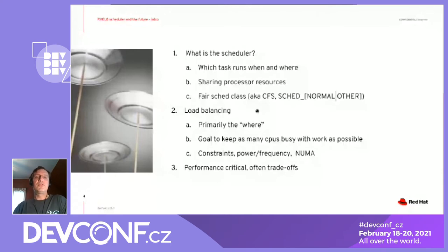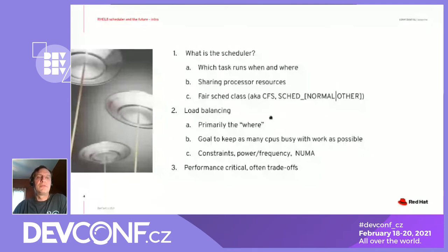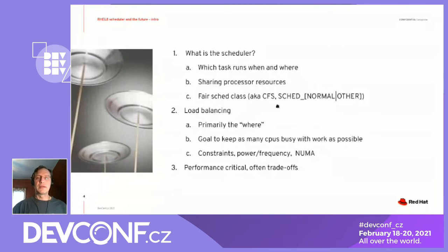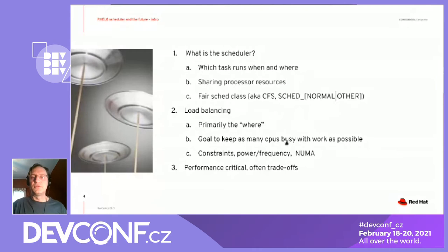In addition to determining when tasks run — for how long and swapping them out when it's time to switch — where tasks run is also the province of the scheduler, and this happens in code called load balancing. The goal of the scheduler, especially in modern multi-processor systems, is to spread the load across all processors as much as possible. It's what's called a work-conserving scheduler: if there are tasks to run, we should find a CPU to run them on rather than having idle CPUs while work can be done.